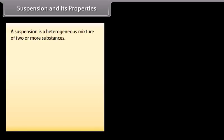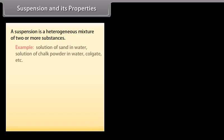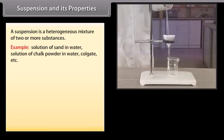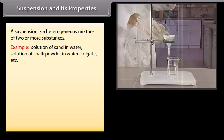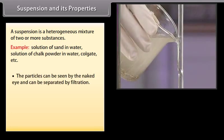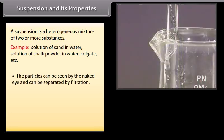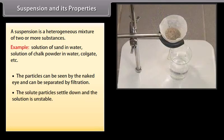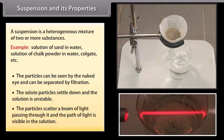Suspension and its properties. A suspension is a heterogeneous mixture of two or more substances. Examples: solution of sand in water, solution of chalk powder in water, Colgate, etc. The particles can be seen by the naked eye and can be separated by filtration. The solute particles settle down, and the solution is unstable. The particles scatter a beam of light passing through it, and the path of light is visible in the solution.